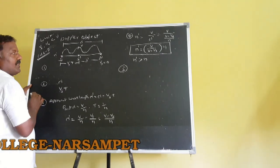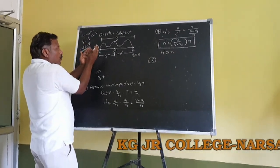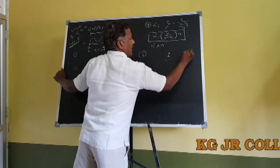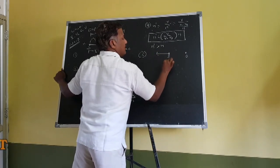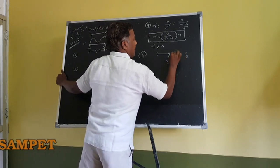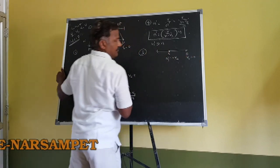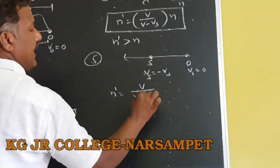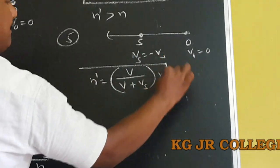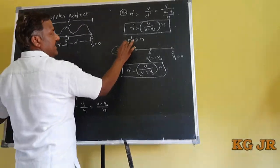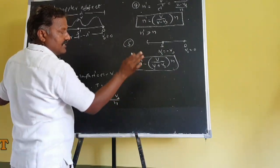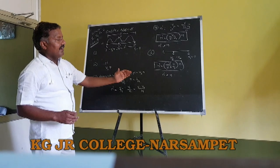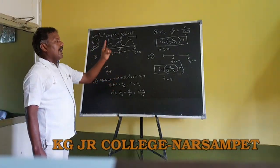Another case: suppose source is moving away from the observer. Away from the observer means Vs is replaced by minus Vs, and V0 equals zero. Substituting in the equation: N dash equals V/(V plus Vs) × N. In the first case (approaching), N dash is greater than N. In the second case (moving away), N dash is less than N — apparent frequency is less than actual frequency.